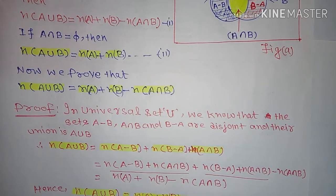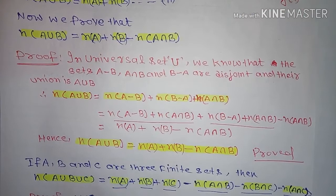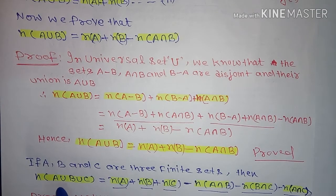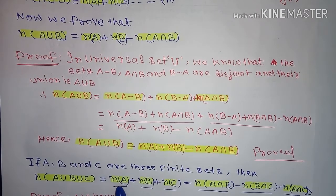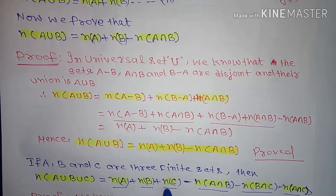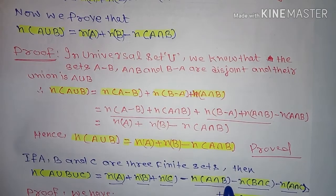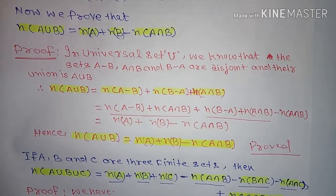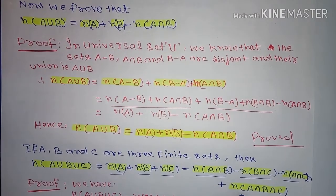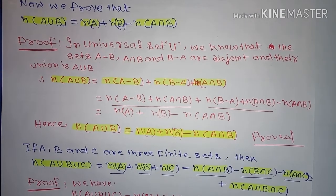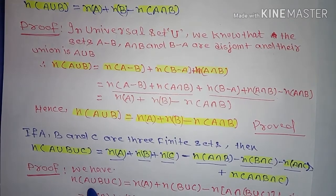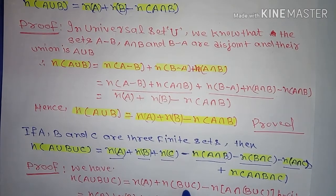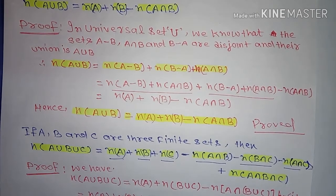If A, B, C are three finite sets, then number of elements in A union B union C is equal to n(A) plus n(B) plus n(C) minus n(A intersection B) minus n(B intersection C) minus n(A intersection C) plus n(A intersection B intersection C). To prove this, we write n(A union B union C) as n(A) plus n(B union C) minus n(A intersection B union C) by equation 1.